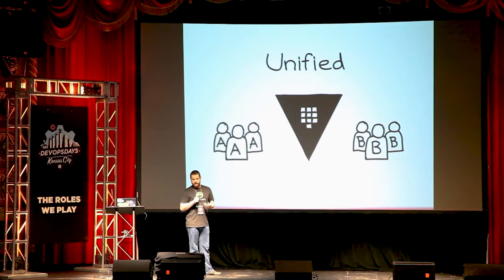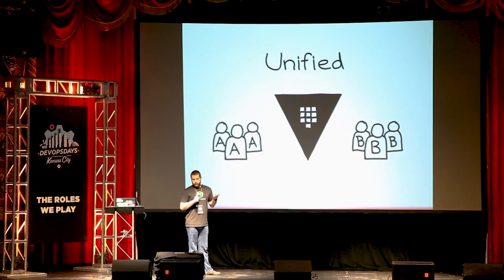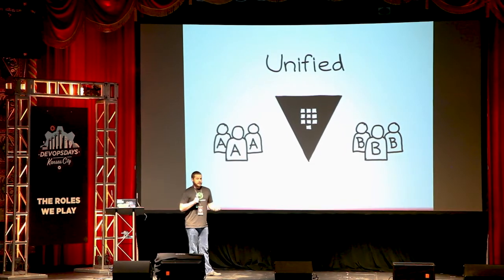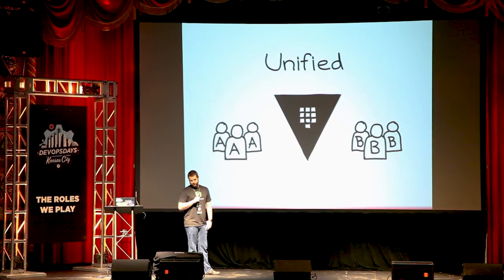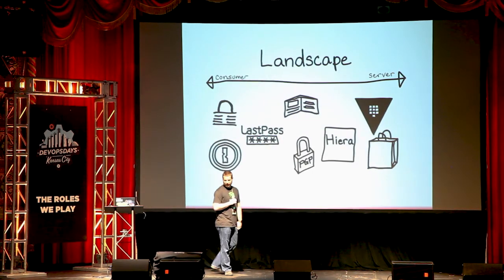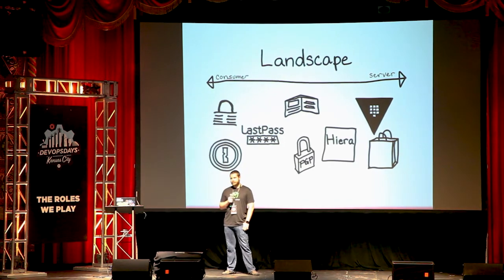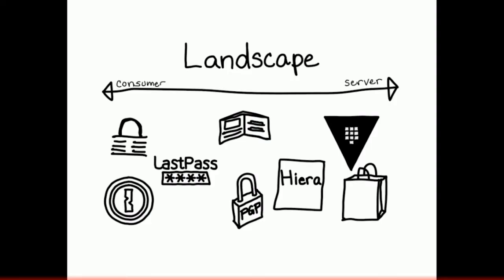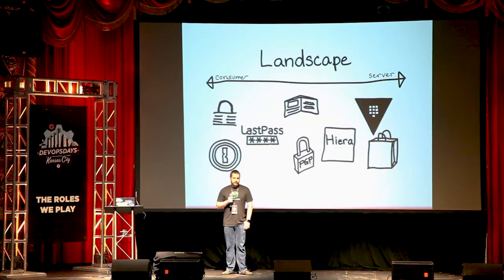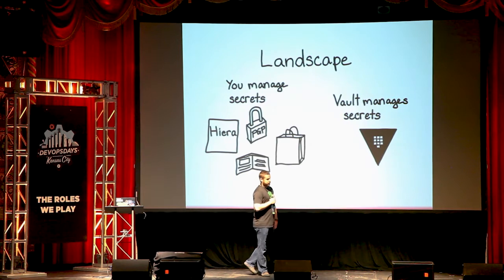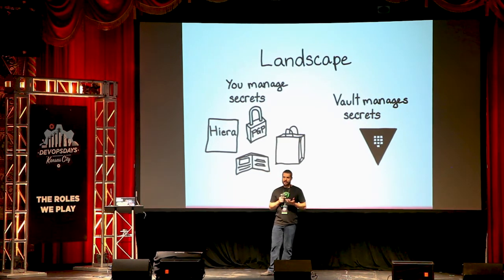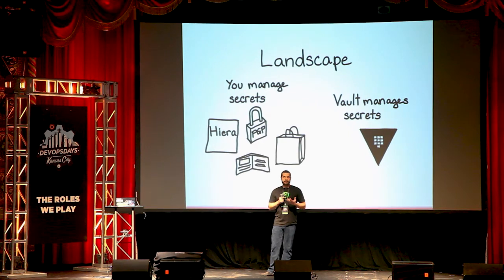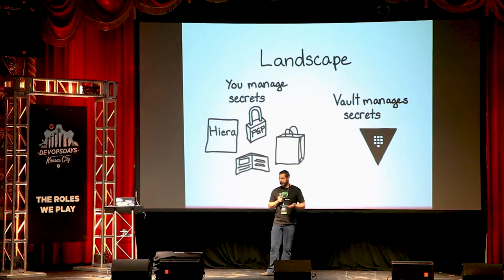What HashiCorp Vault provides is a unified interface for your developers and administrators to manage secrets in your organization. In the landscape of technologies, it's geared more towards the server side — it's not something you install on your desktop like LastPass or 1Password. It's definitely more on the server side. But the difference between it and other server-side technologies is that it manages more of the secret life cycle — the entire life cycle of the secret, as opposed to just encrypting something for you.